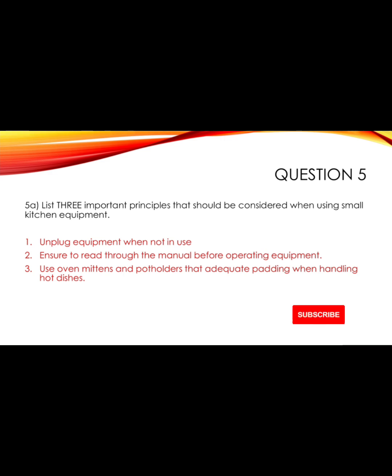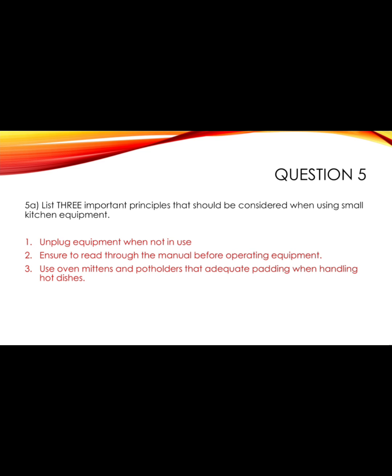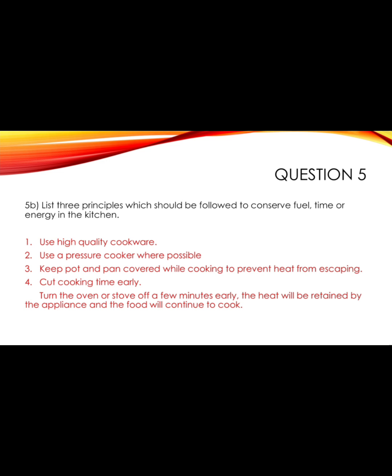Moving on to question five: list three important principles that should be considered when using small kitchen equipment. First, unplug equipment when not in use. Second, read through the manual before operating equipment. Third, use oven mittens and pot holders with adequate padding when handling hot dishes.